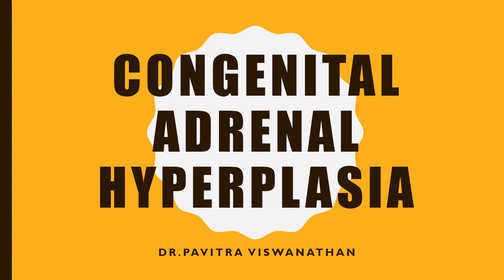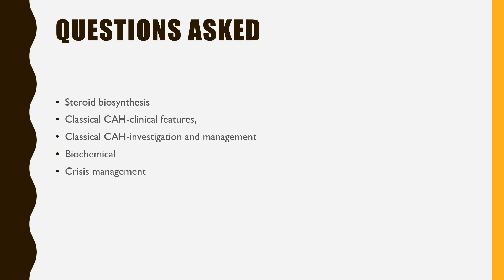Congenital adrenal hyperplasia is one of the dreaded questions and it is easy to forget the steps in management and the biochemical pathways. So here I have tried to make it as simple and understandable as possible. The topics covered include steroid biosynthesis, classical CAH which is 21-alpha hydroxylase deficiency, clinical features, investigation, management, biochemical changes in classical CAH, and crisis management.